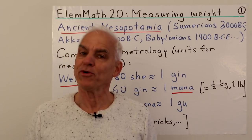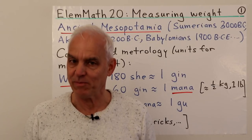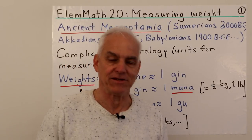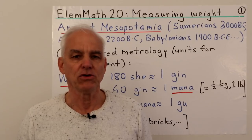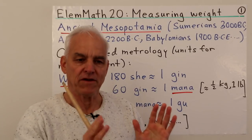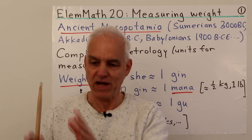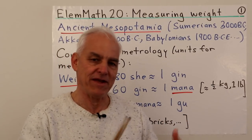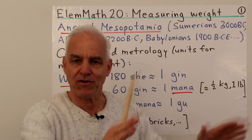Welcome everyone. I'm Norman Wellberger and we are carrying on with our Elementary Mathematics Explained series where we're trying to explain the mathematics for K-6 students, young primary school students, in a way that's useful to their parents and their teachers, and which is oriented from a mathematical perspective rather than the traditional educational point of view.